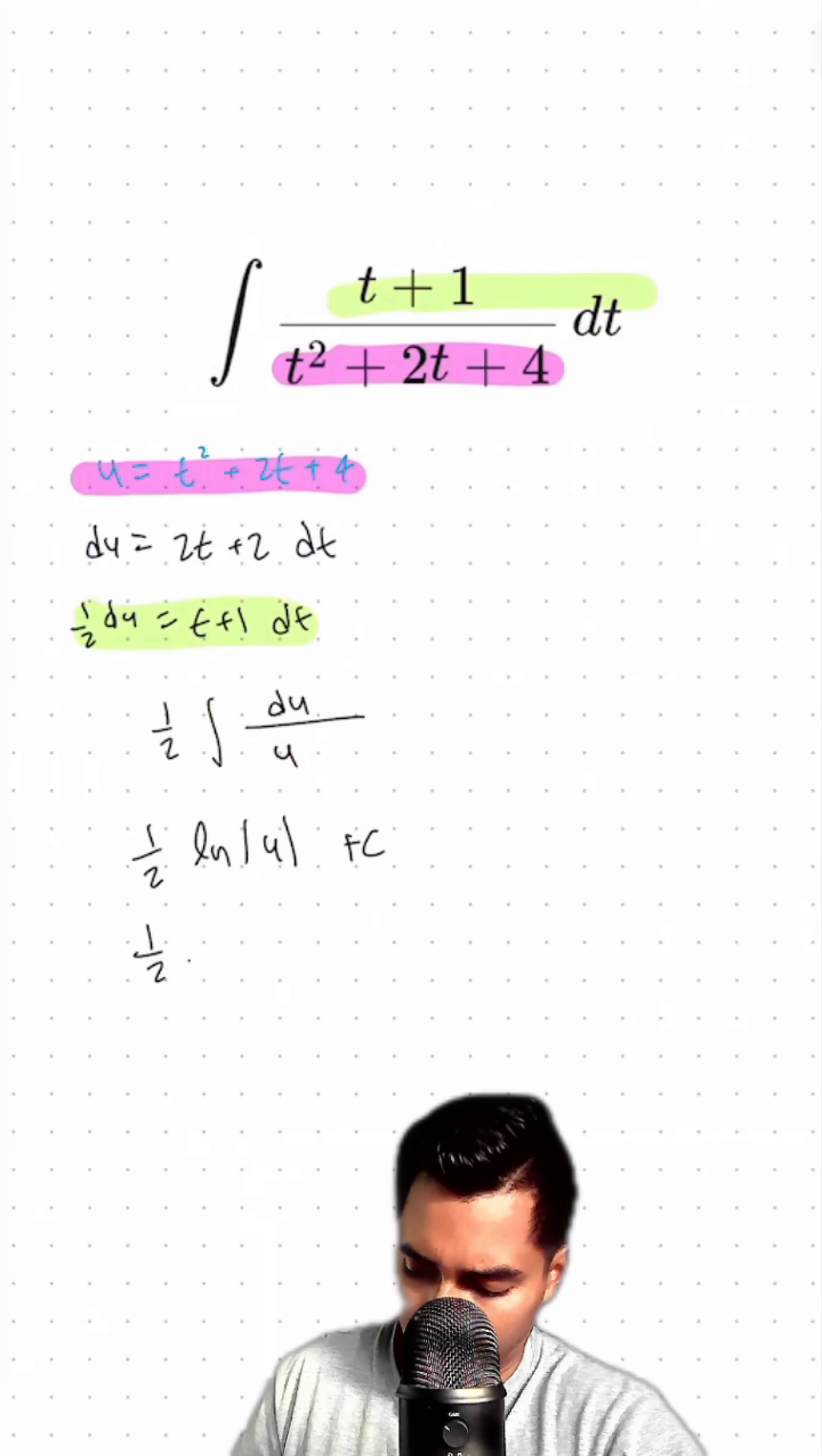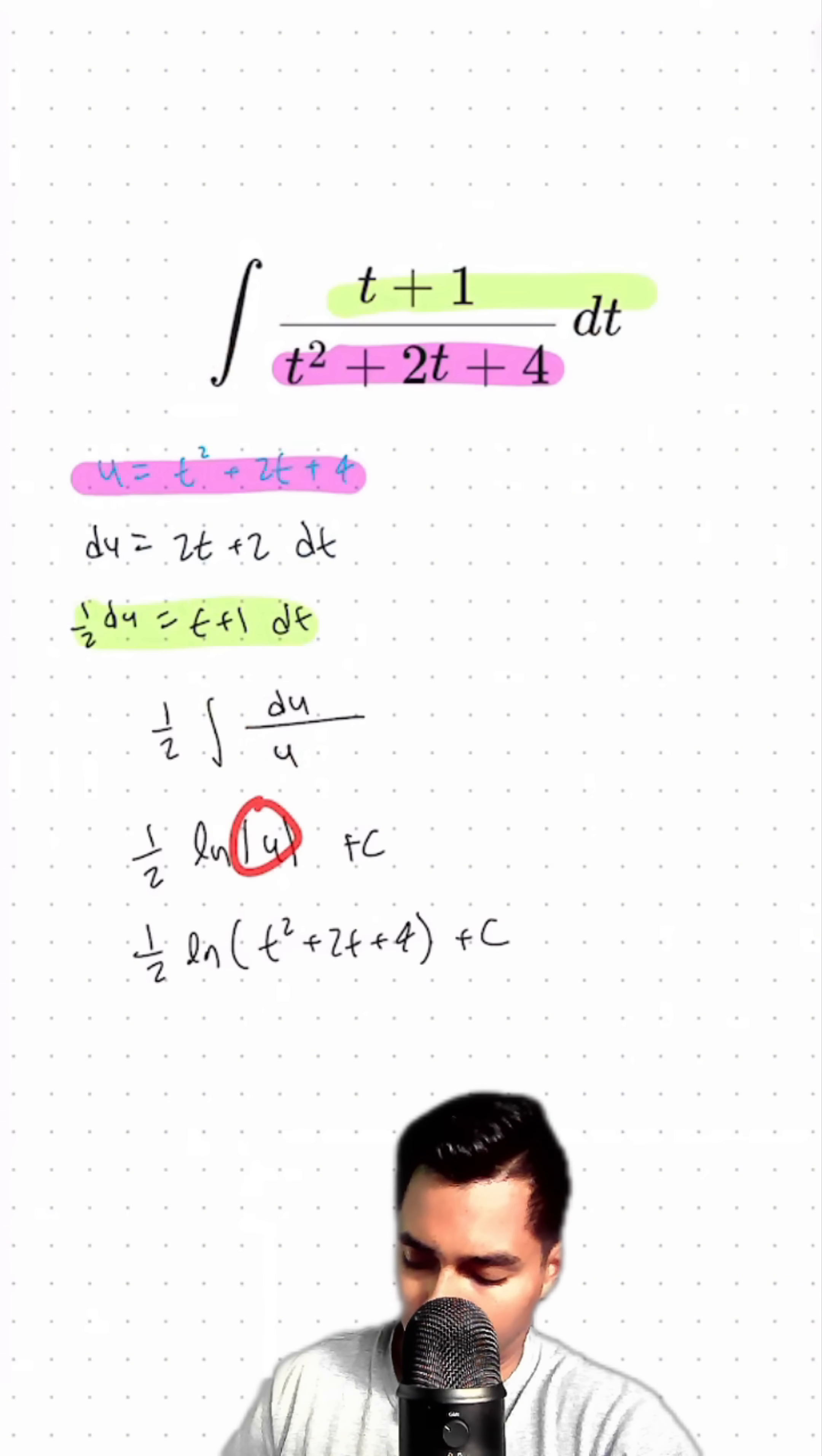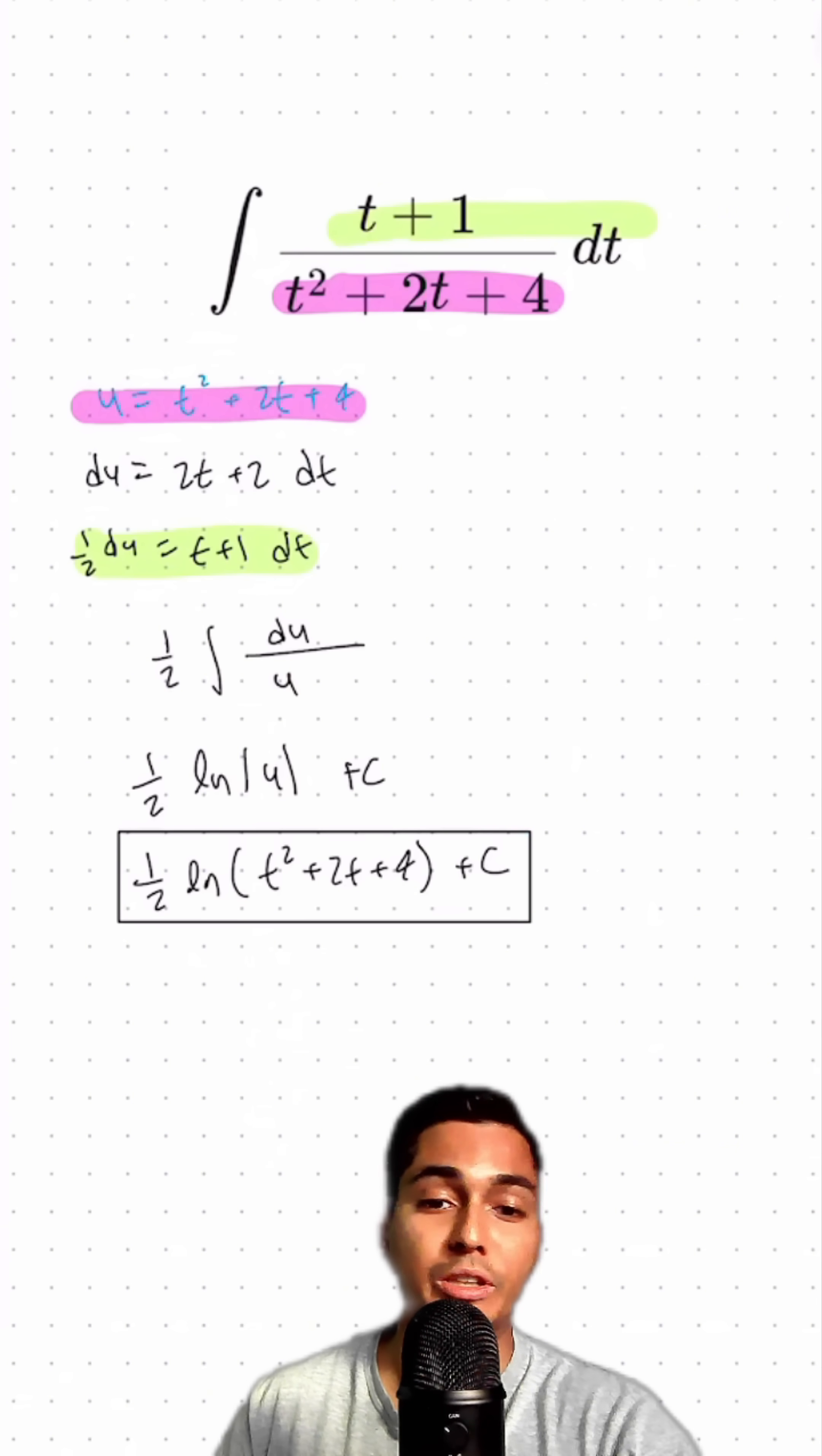The u can be replaced by our original definition for t squared plus 2t plus 4 plus c. Notice that we changed the absolute value into parentheses because this is positive for all values of t. Our final answer is 1 half times the natural log of t squared plus 2t plus 4 plus c.